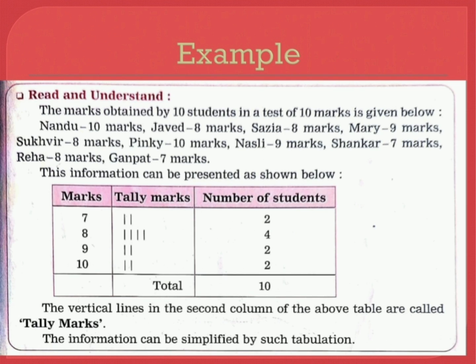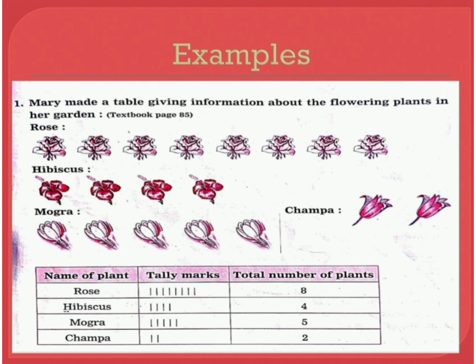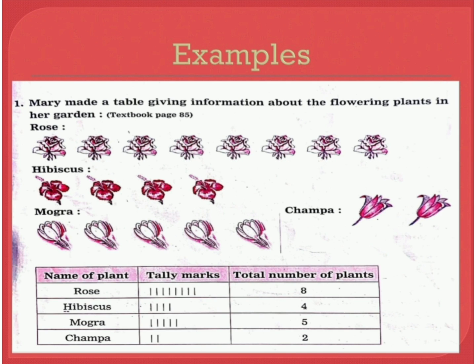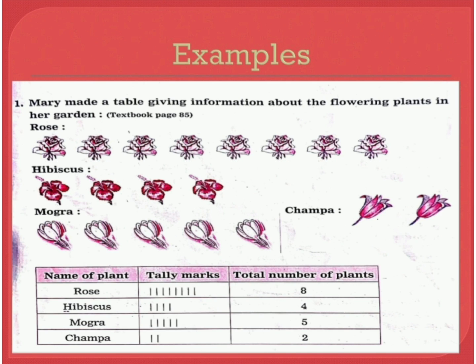Let's understand the example given. Mary made a table giving information about the flowering plants in her garden. The tally marks here tell us about the total number of plants: Rose 8, Hibiscus 4, Mogra 5, and Champa 2.